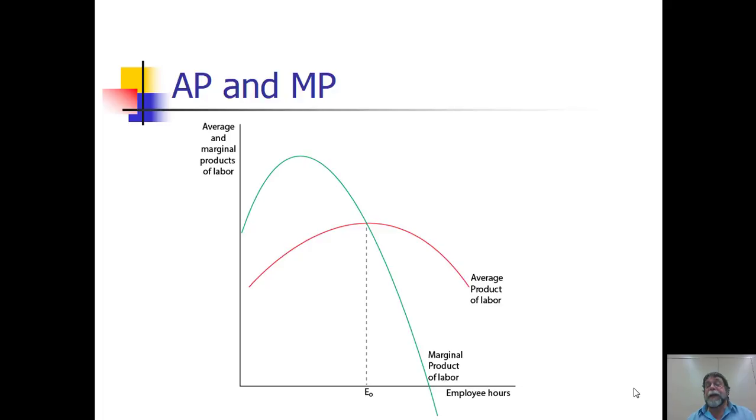And the reason for that is fairly intuitive. If we think about any level of labor use to the left of E0, we observe that marginal product is greater than average product. What that means is that the contribution of an additional worker is greater than the average amount that workers are already producing. And if an additional worker produces more output than the average amount produced, that's going to raise the average up. Similarly, if we move to the right of E0, an additional worker produces less output than an average worker is producing, and that pulls the average down. So what that tells us is to the left of E0, average product is rising. To the right of E0, average product is falling. And therefore, the point at which it changes from rising to falling must be a maximum. So the average and marginal product curves will always intersect at the maximum level of average product.